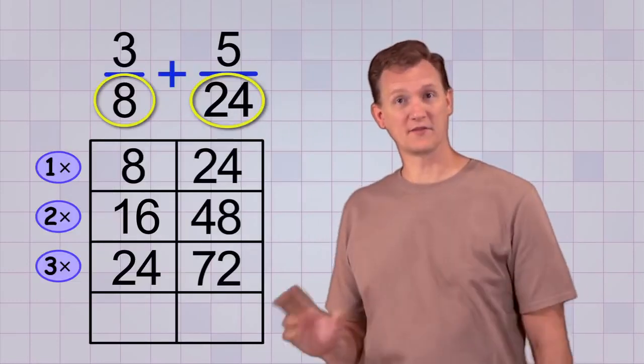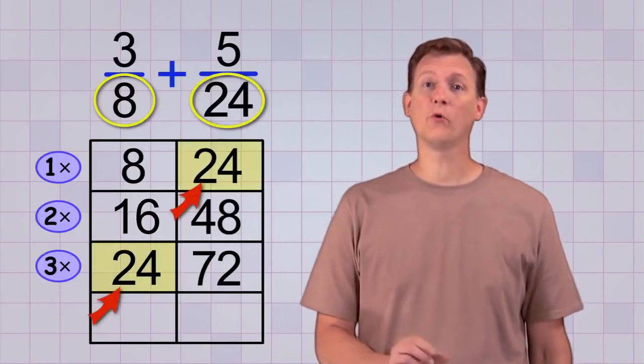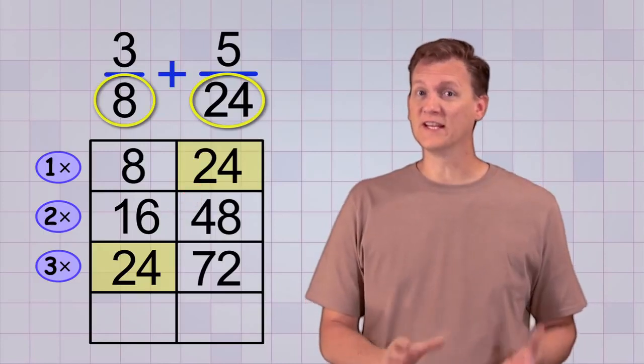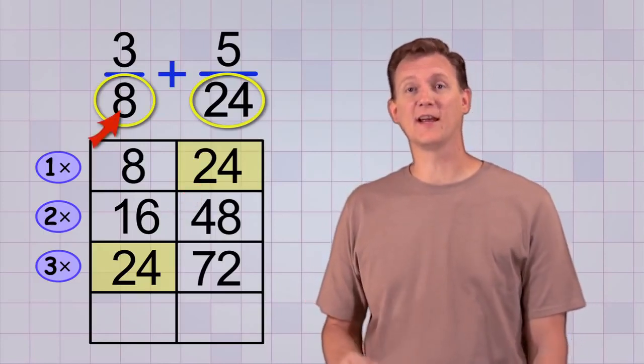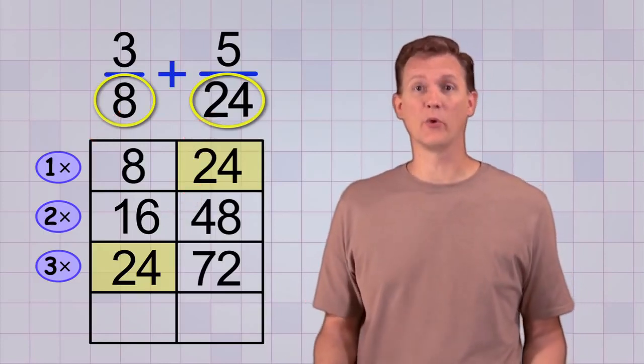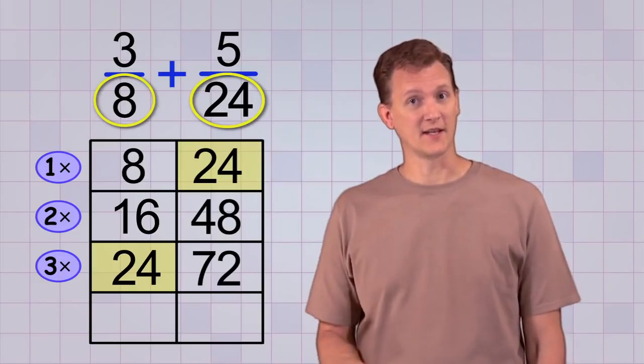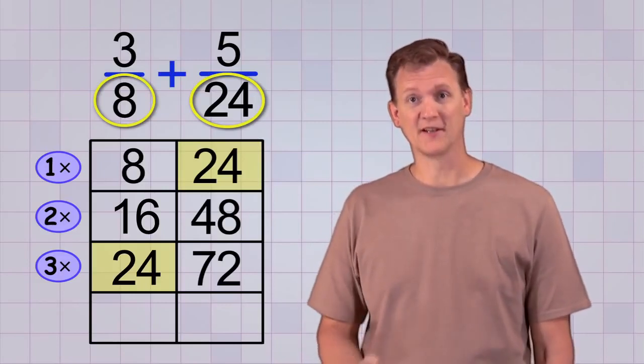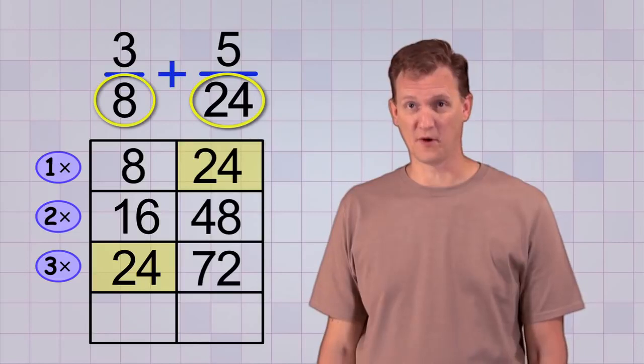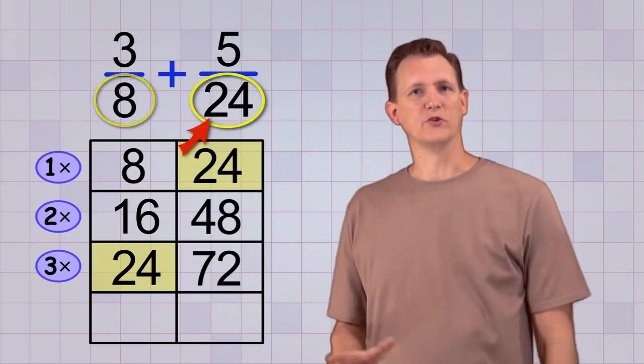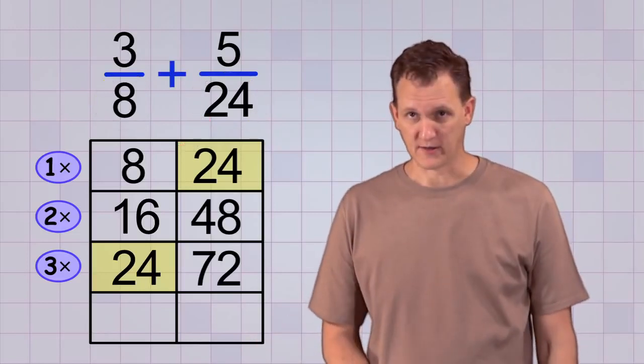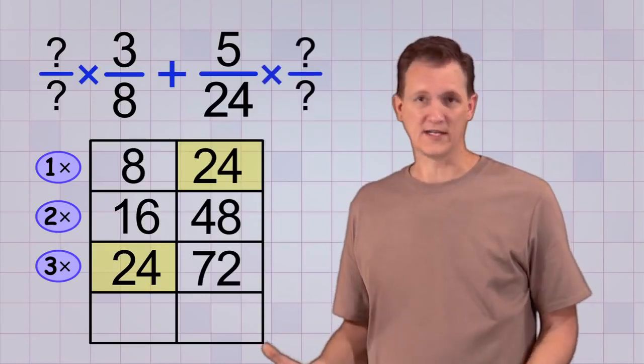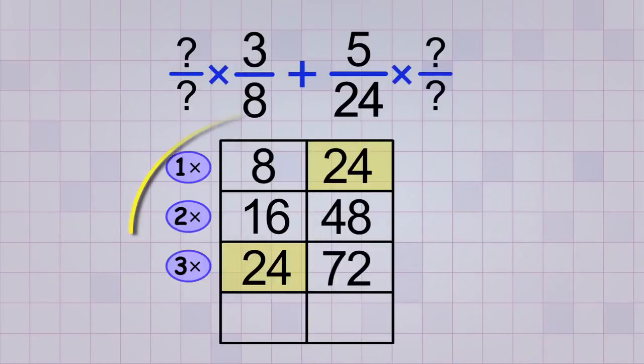But look! We have something in common now. We have a 24 in each column. We have found the least common multiple of the numbers 8 and 24, and it happens to be 24. That makes sense if you remember your multiplication tables, that 3 times 8 equals 24. So now we know we're going to use 24 as our common denominator. But what whole fractions do we need to get it? The answer lies in our multiples chart.